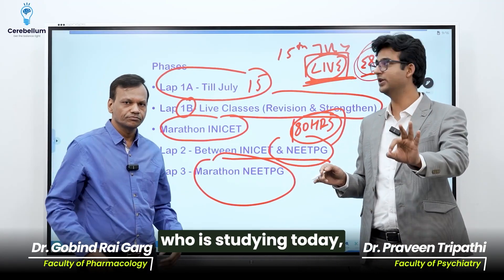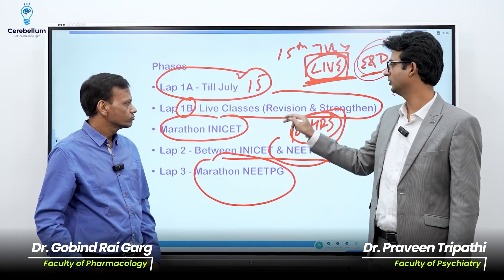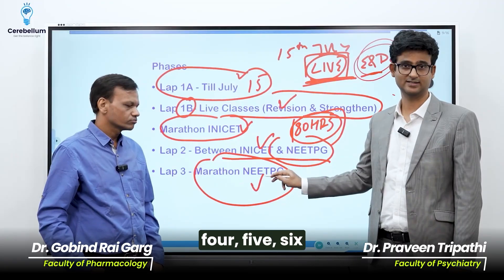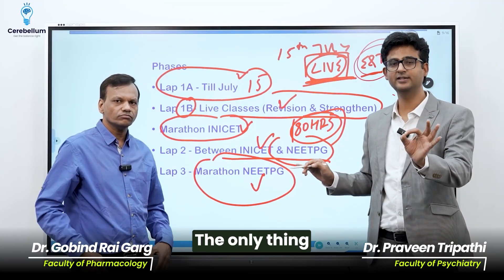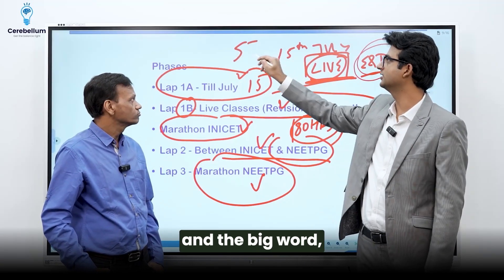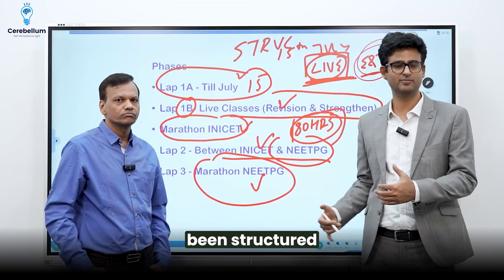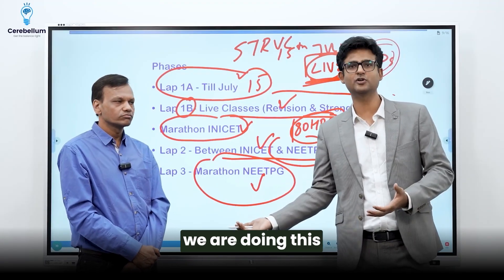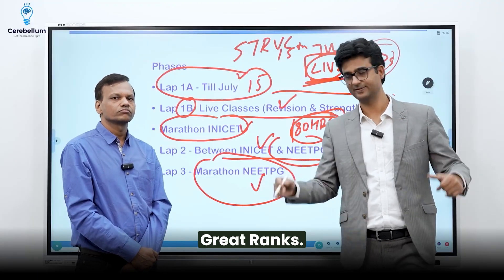So if you are a student who starts studying today, imagine the number of revisions you would have — 1, 2, 3, 4, 5, 6. And the schedule is not that difficult. The only thing we are talking about is maintaining regularity and following the structure. This schedule has been structured beautifully, and now that we have been doing this for a couple of years, we know that students who follow it get great ranks.